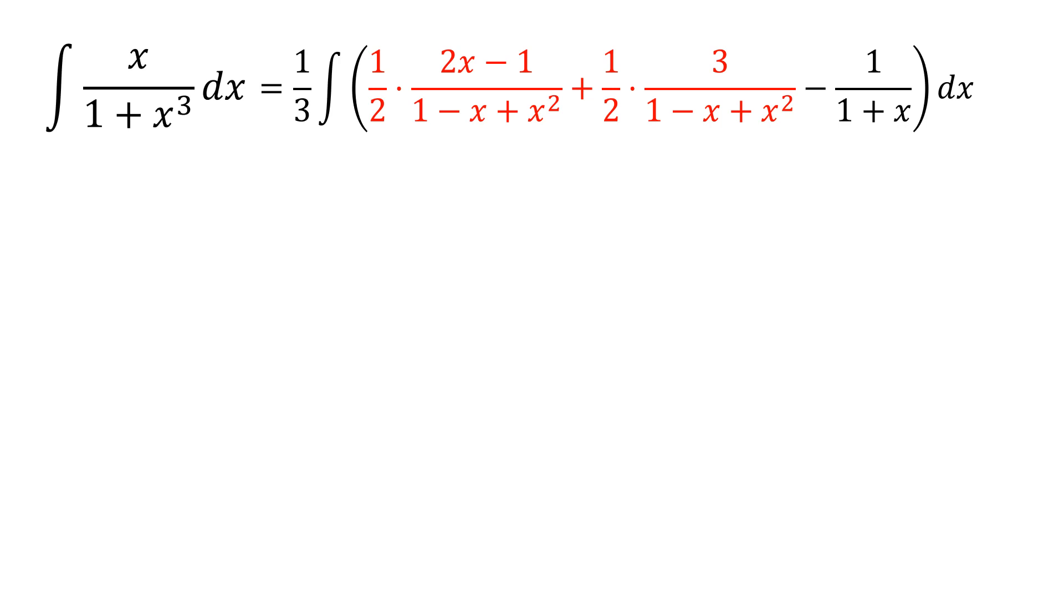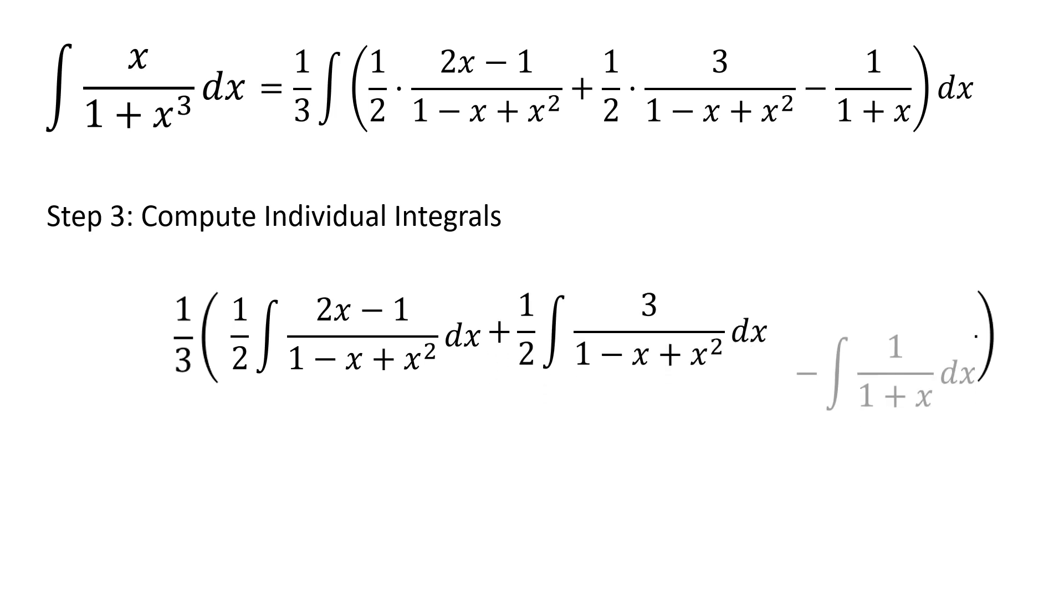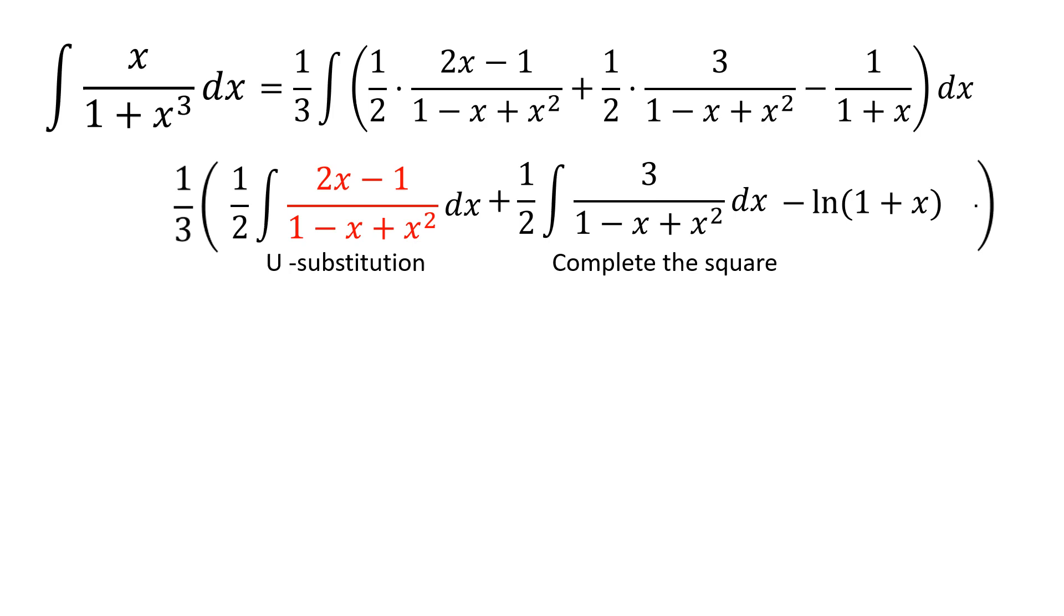We now have an integral that has three terms. Using the property that integrals are linear, if I have the integral of a sum, I can take the integral of each individual element of that sum. I can split this up into three integrals which I will then solve individually. The first integral will be solved by u substitution, the second will be solved by completing the square, and the third integral is simple enough that I can solve it directly, which is going to be the natural log of 1 plus x.